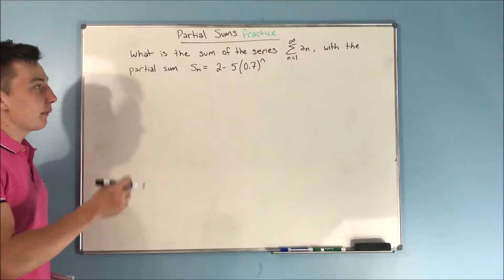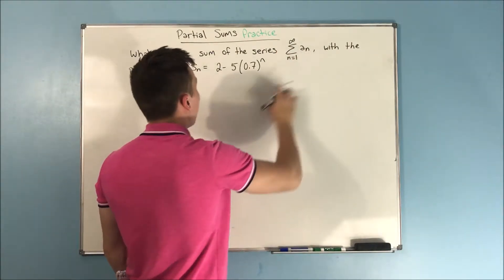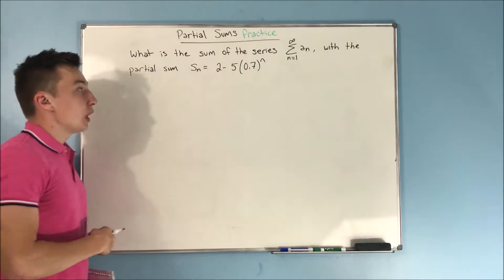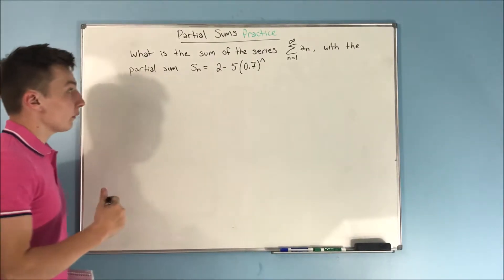What is the sum of the series, the sum from n equals 1 to infinity of a sub n, with the partial sum s sub n equals 2 minus 5 times 0.7 to the n?